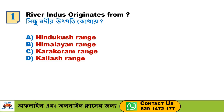First question: River Indus originates from — A. Indukush Range, B. Himalayan Range, C. Karakoram Range, D. Kailash Range. The correct answer is D, Kailash Range.